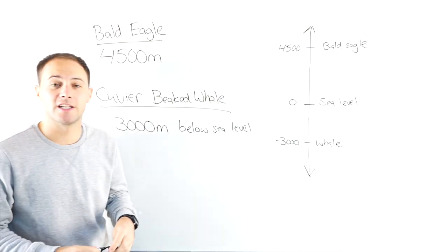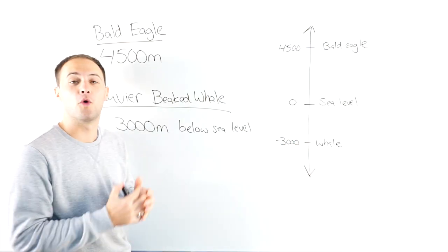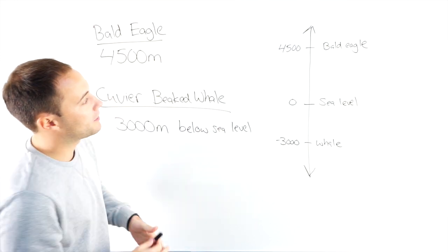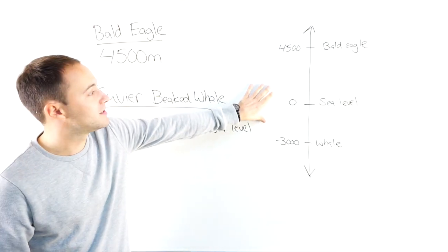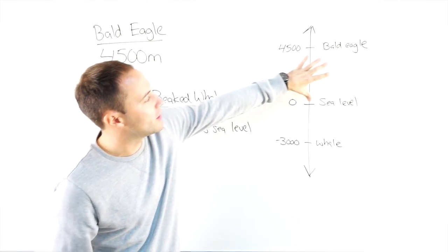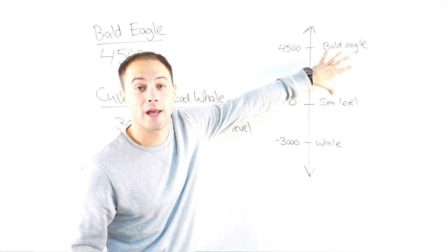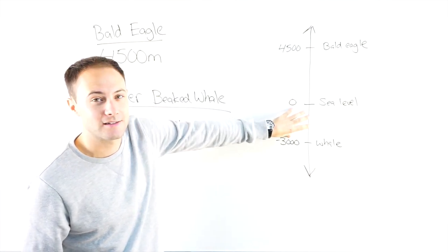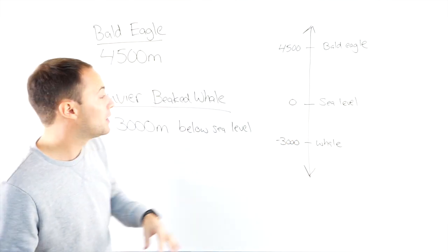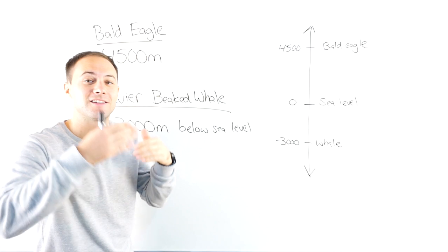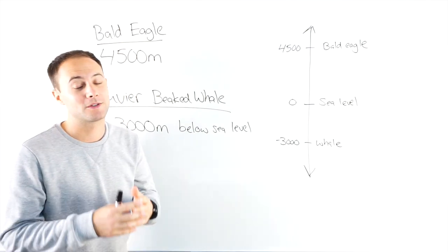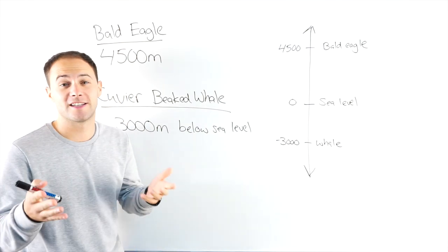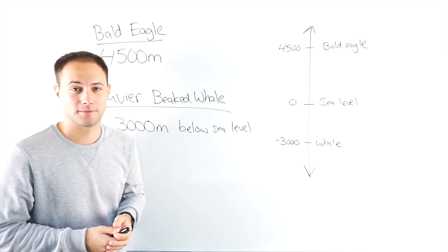So the question is, which one is farther away from sea level? Hopefully with the number line, you can see that the bald eagle is definitely farther away because this distance is greater than this distance. Now when we're talking about distances away from zero, we're talking about absolute value. So let's get into absolute value and some examples.